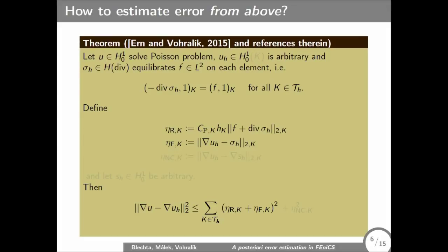In fact, this can be refined also to non-conforming approximations, where there's some additional term estimating and controlling non-conformity. And one needs also additional reconstruction of U_h to the space. So this is nice. But how to construct this sigma_h?